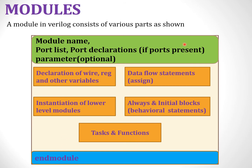A module should be declared using the keyword module followed by the module name and port list. After that, we should have the port declarations. Depending on the functionality, we can use either data flow statements, behavioral statements, or design methodologies where we instantiate lower level modules. We can define tasks and functions, and declare wires, registers, and other variables. Every module must end with the keyword endmodule.